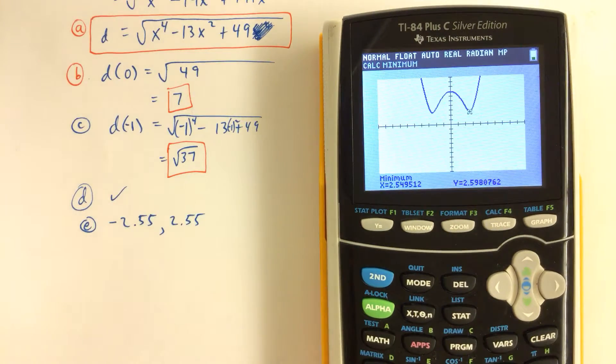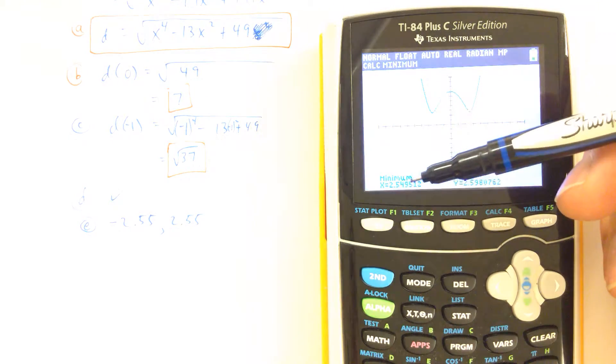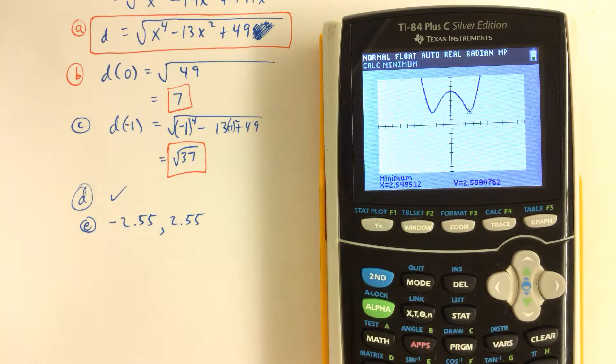So we can see that when X is equal to either negative 2.55 or 2.55, the distance between the point on that curve Y equals X squared minus 8 and the point 0, negative 1 is at a minimum. That's how that works.